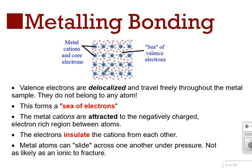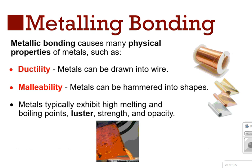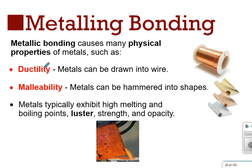Metals are essentially able to move and slide across each other, unlike ionic compounds which cleave and crack under pressure. Metals can reform and take different shapes. Microscopically, metals form crystal unit cells, much like ionic compounds, but that shape can change. Key physical properties include electrical and thermal conduction — the freedom of electrons allows them to conduct heat and electricity easily. Metals can be pressed into wire (ductility) and hammered into shapes (malleability), because the atoms can slide across one another while insulated by electrons. Additional properties include boiling point, luster, melting point, strength, and opacity.